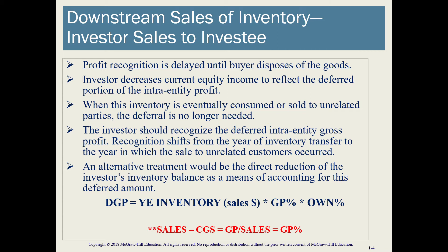We're going to have to calculate a deferred gross profit. We're deferring this gross profit until the sales take place to someone outside this relationship. I have a formula here: we take our year-end inventory — whatever is left in inventory at the end of the year, at sales price, not cost — and then multiply that by the gross profit percentage, and then multiply it by the ownership percentage. The order doesn't really matter as long as we have those three components.